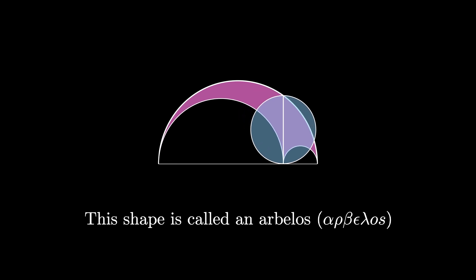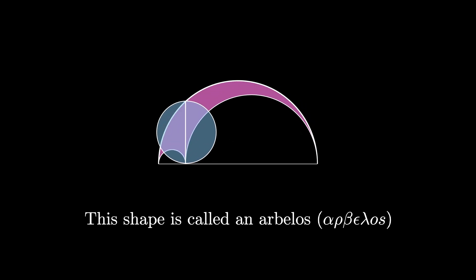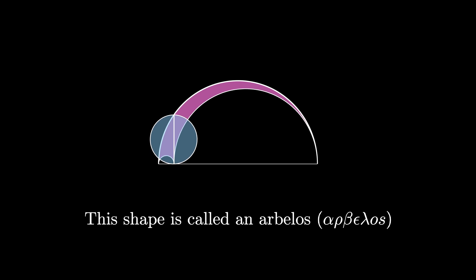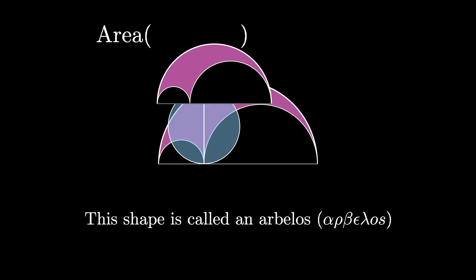As we vary the sizes of the inner semicircles we see that this new circle's area changes just like the arbelos area changes. The amazing principle here is that the area of the arbelos is actually equal to the area of that circle that has the semicord as its diameter.